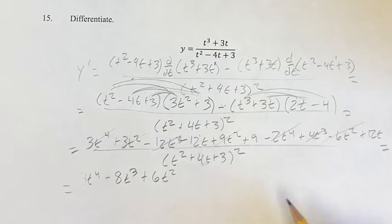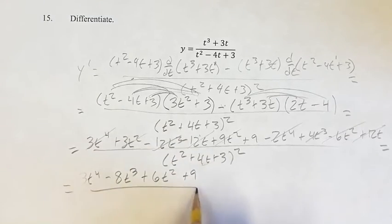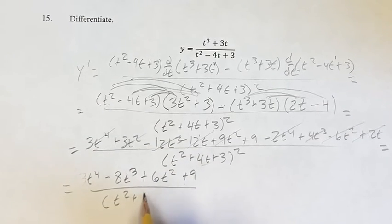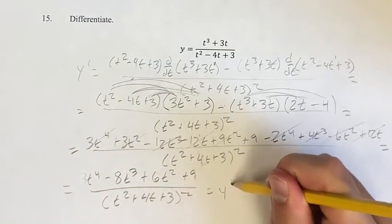For our linear terms, we just have minus 12t, plus 12t, so that's plus 0, and plus 9 at the end. And this is all over t squared plus 4t plus 3 squared. This is your derivative.